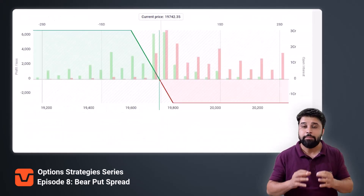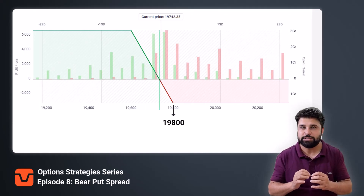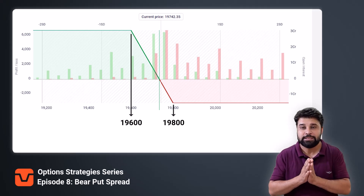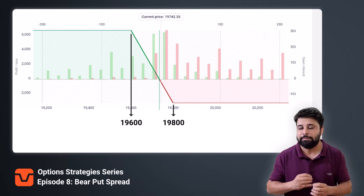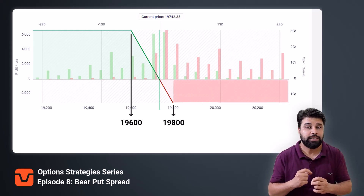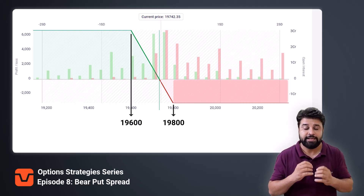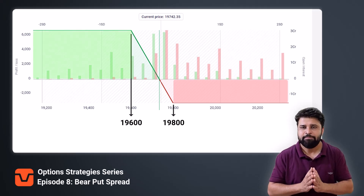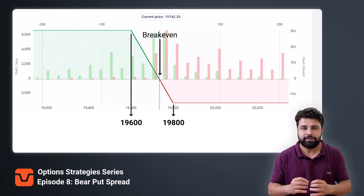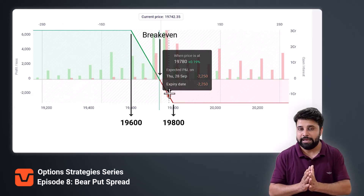Now let's analyze the payoff chart of the bear put spread strategy. You have bought a put option at the 19,800 strike by paying the premium, and you have sold a put option at the lower strike of 19,600, receiving the premium. You will incur a max loss if Nifty expires above the 19,800 level — that is in the red zone. You will make the max profit if Nifty expires below 19,600 — that is in the green zone. The breakeven is visible here: if Nifty expires below the breakeven you make some profit, and if it expires above the breakeven you make some loss.